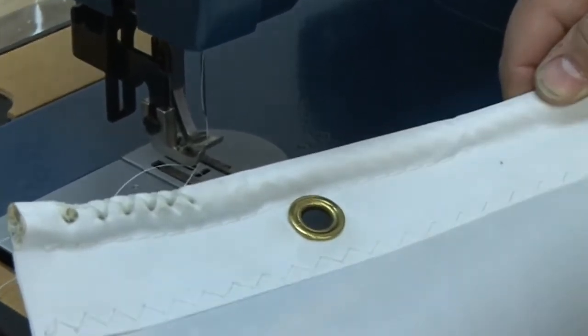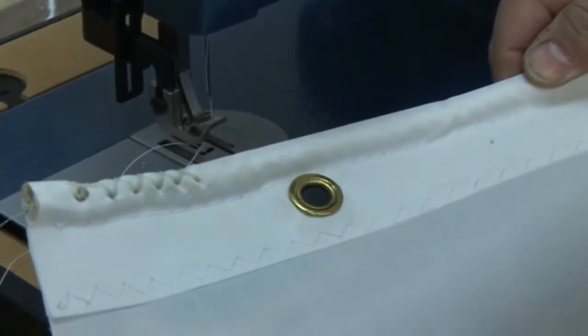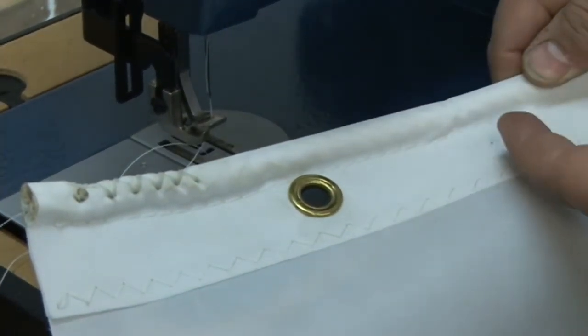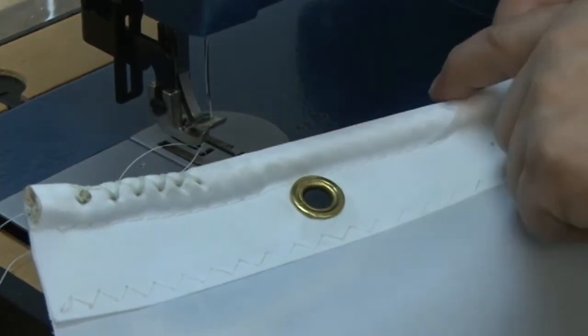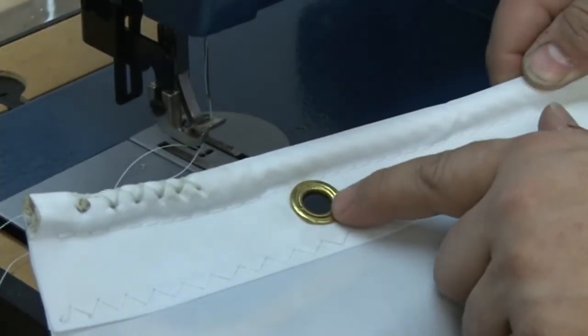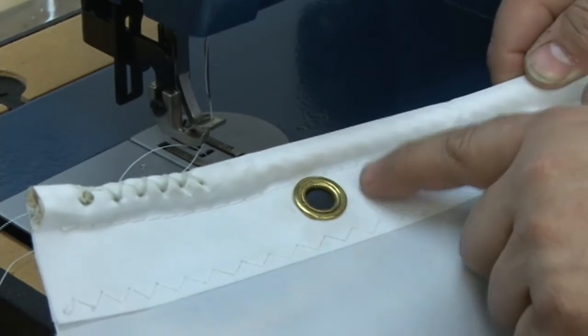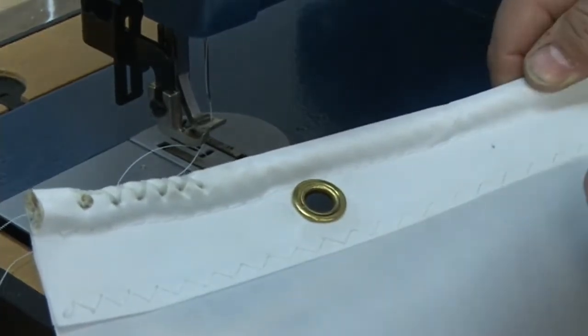So you would typically find a bolt rope like this on the luff or the foot edge of a mainsail, and you do need to get that rope pinched all the way forward in the sleeve in order to allow appropriate space for the insertion of grommets for slug attachment for instance.